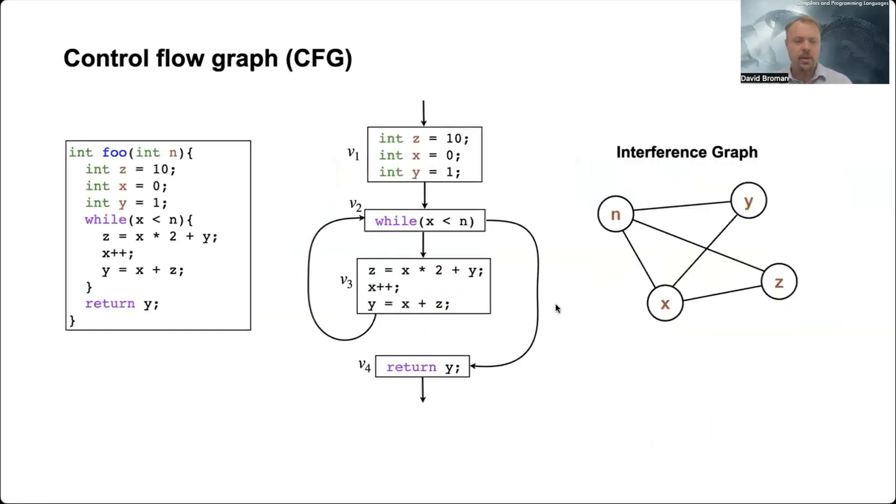Just to recap a little bit here: we have this running example that I presented in the first video with this foo function. There's a parameter and a small while loop. And this is the control flow graph for that particular example.